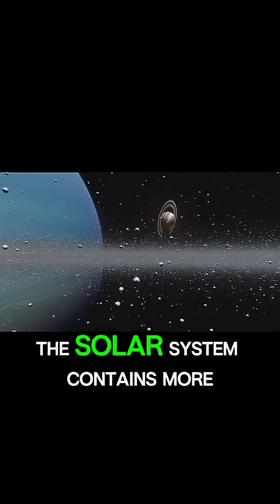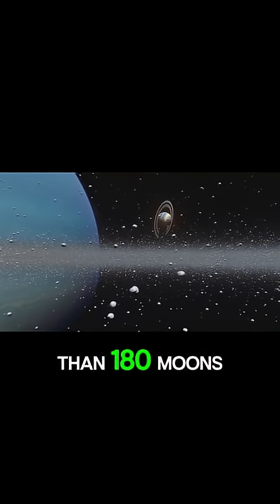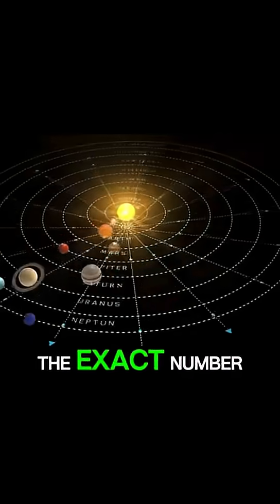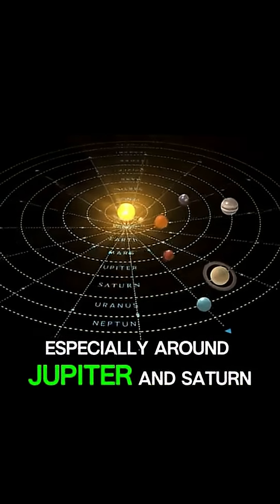Fact number five: the solar system contains more than 180 moons, while discoveries are ongoing about the exact number, especially around Jupiter and Saturn.